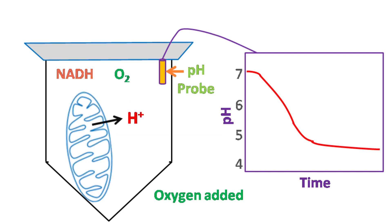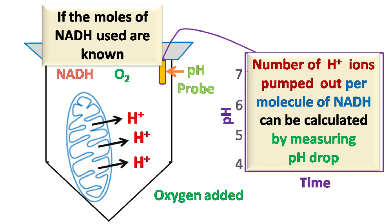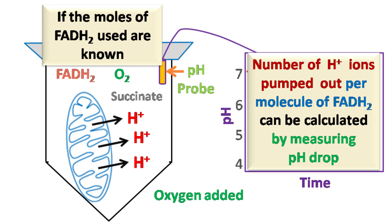This means the H+ ions from mitochondrial matrix are transferred out of mitochondria, leading to pH drop. Now if the concentration of NADH is known, that is number of moles of NADH used for this process is known, then based on the information of pH drop, the number of H+ ions pumped out per molecule of NADH can be calculated.